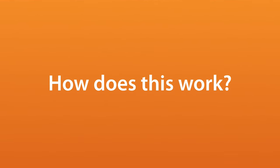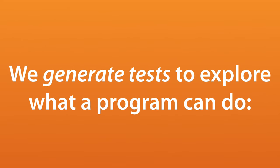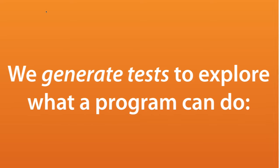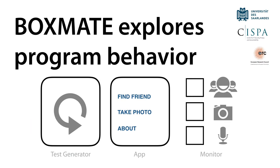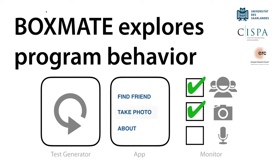How does this work? First, we explore the program behavior by means of generated inputs. BoxMate clicks through the functionality of the app and monitors which sensitive data it accesses, say your contacts or your photos. All of this happens in a secure environment, so the app can do no harm. This test generation makes BoxMate unique because it is fully automatic and anyone can run it safely at any time.